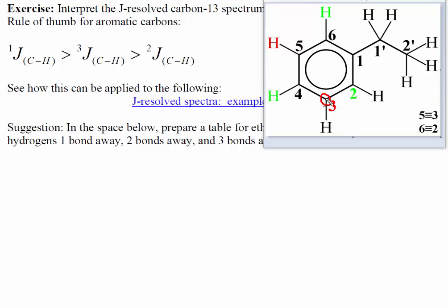And so this signal, the one that is due to this carbon split by the hydrogen attached and split by the hydrogen at C5, that should be a doublet of doublets. In other words, the primary splitting is a doublet, but then each of those prongs of the doublet will be split into doublets. So you'll have a doublet of doublets.